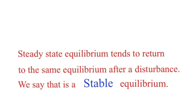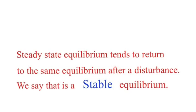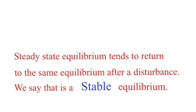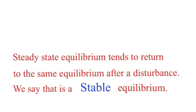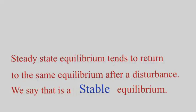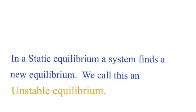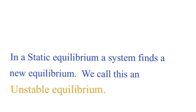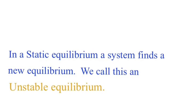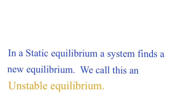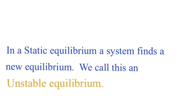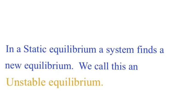Steady state equilibrium tends to return to the same equilibrium after a disturbance, and we call that a stable equilibrium — it's the same equilibrium, it returns to it, so it's stable. In contrast, an unstable equilibrium is really what static equilibrium is. When something disrupts it, it finds a new equilibrium, and since it's a new equilibrium, we call it unstable equilibrium.